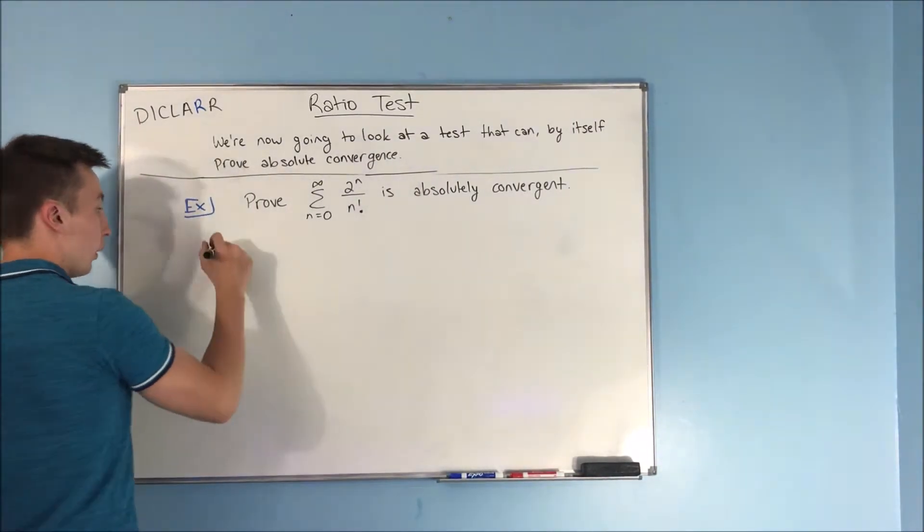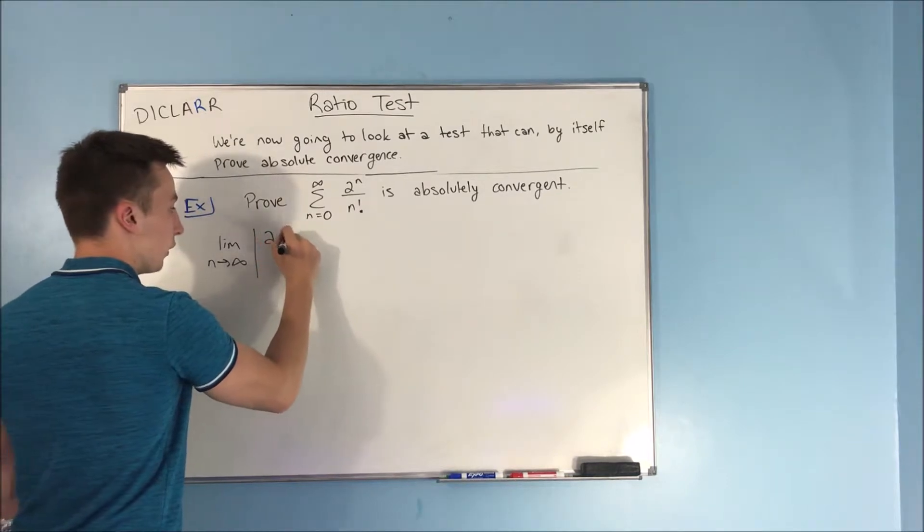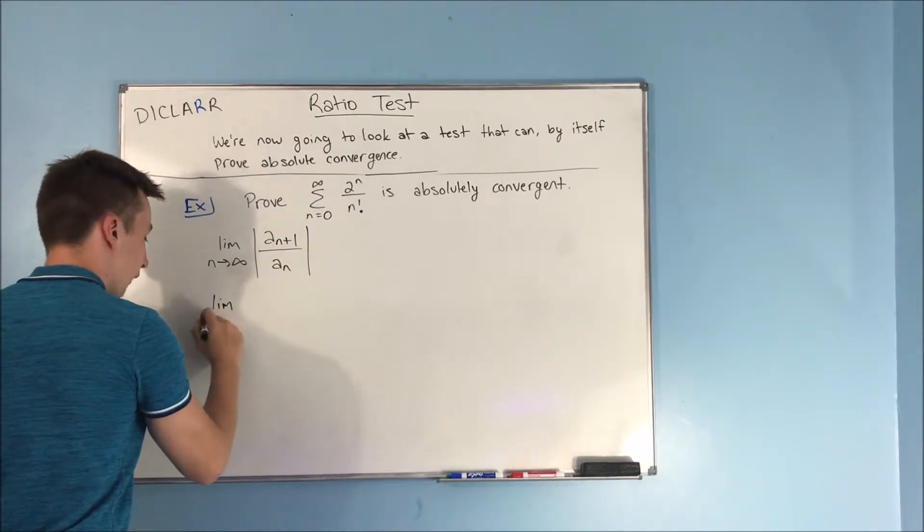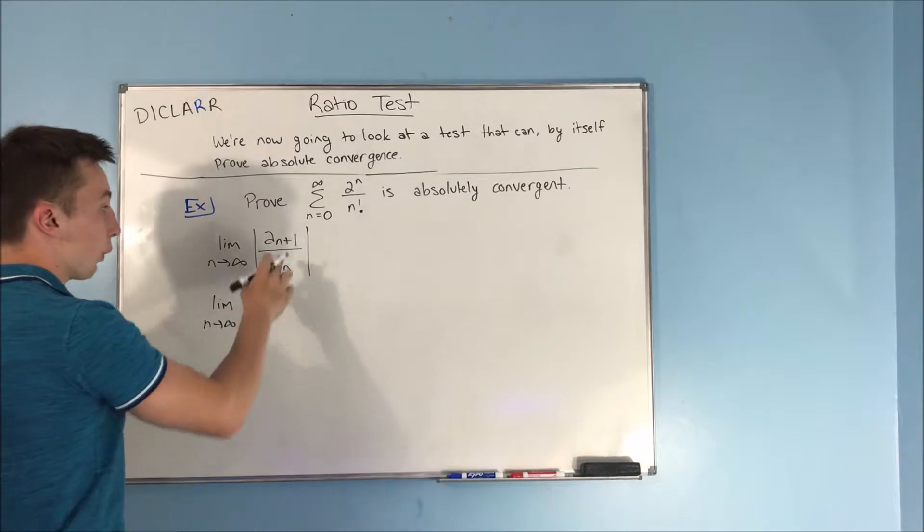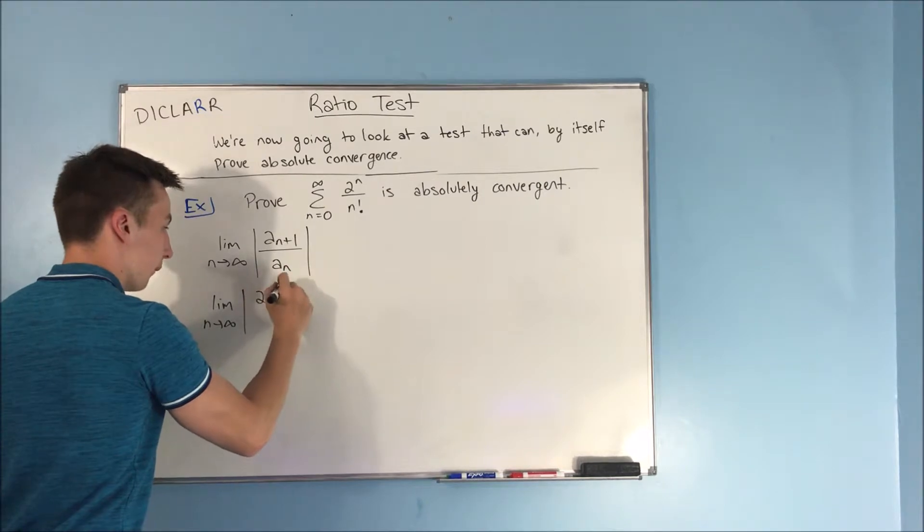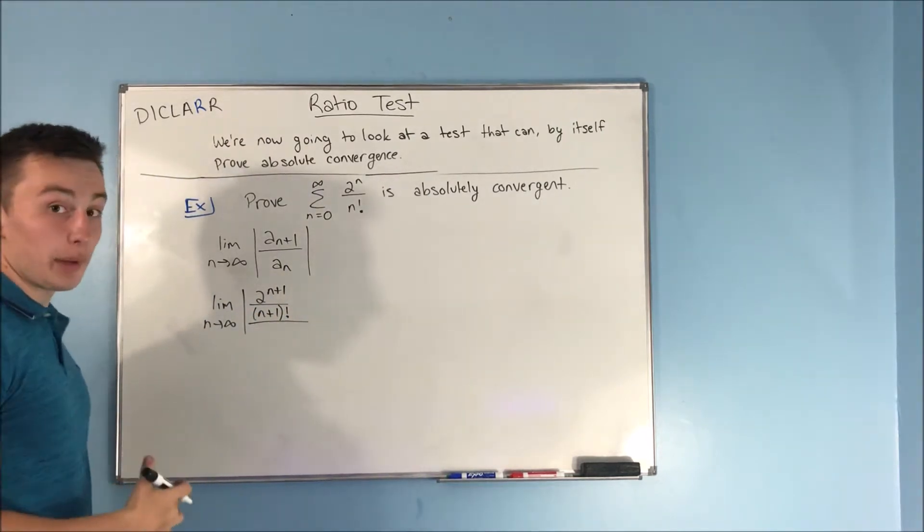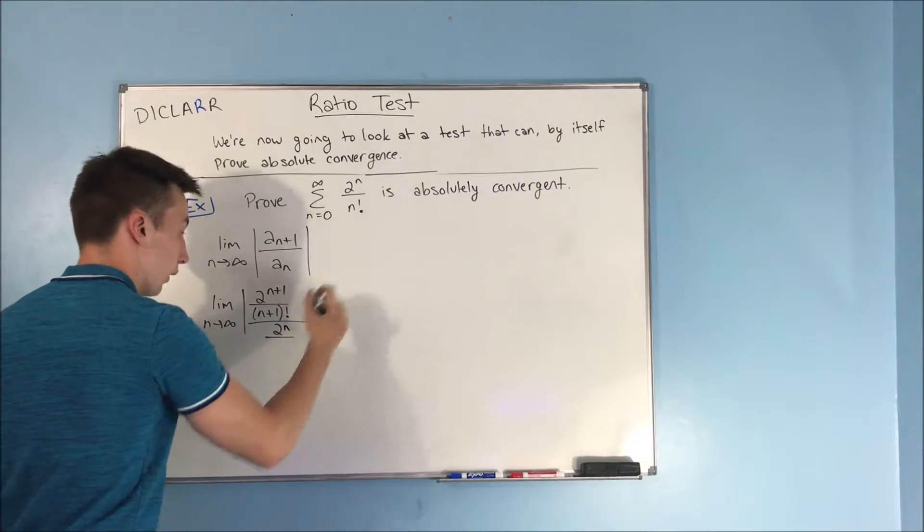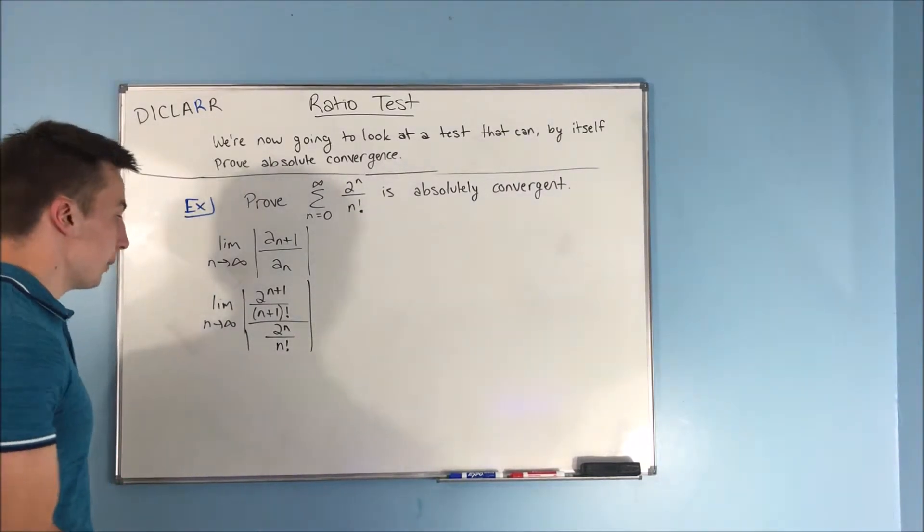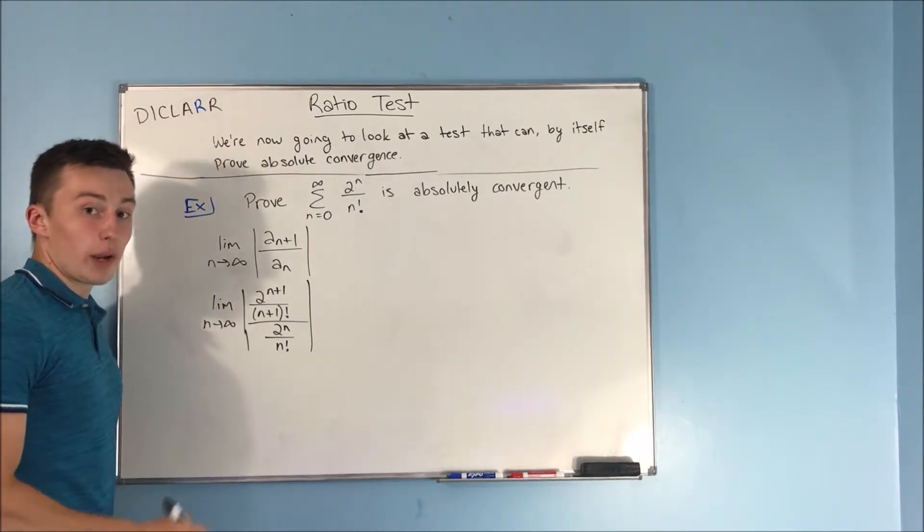So now we can start with our ratio test. We take the limit as n approaches infinity of the absolute value of a sub n plus one over a sub n. So we're plugging in n plus one for n. We have two to the n plus one over n plus one factorial, and that's going to be over our a sub n, which is just two to the n over n factorial. Now we don't need the absolute value signs here because everything you see is going to be positive.